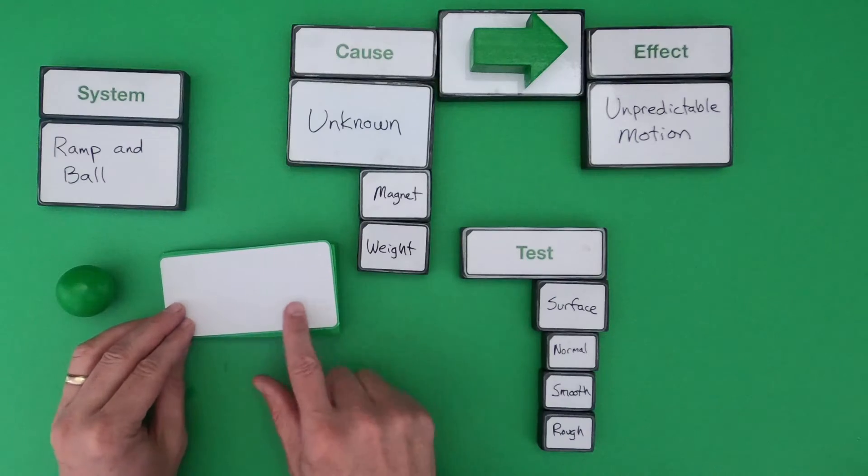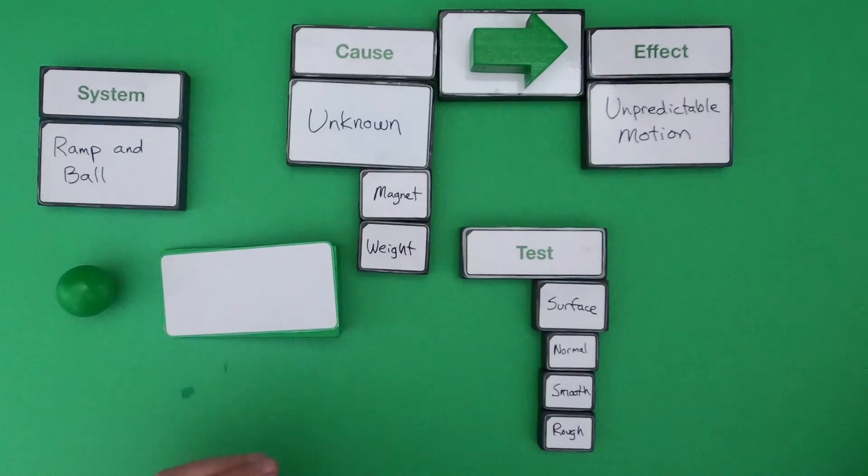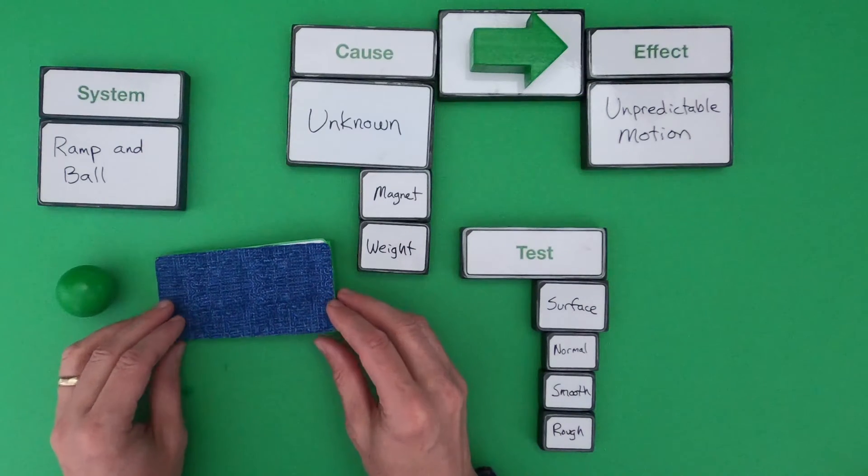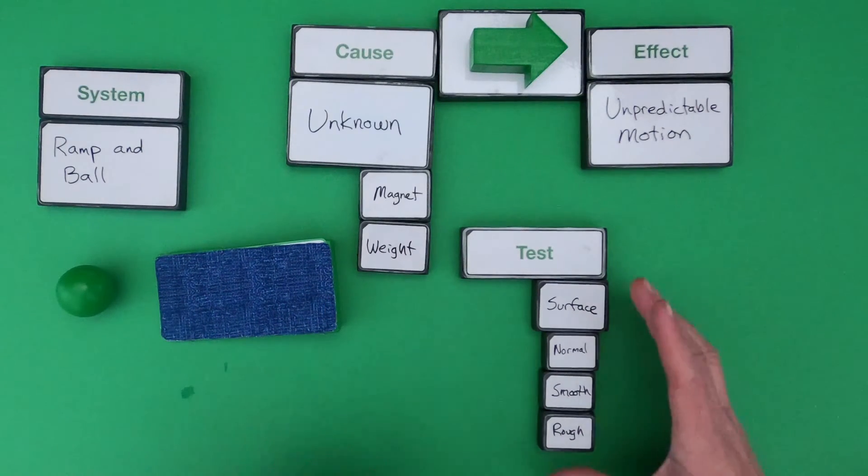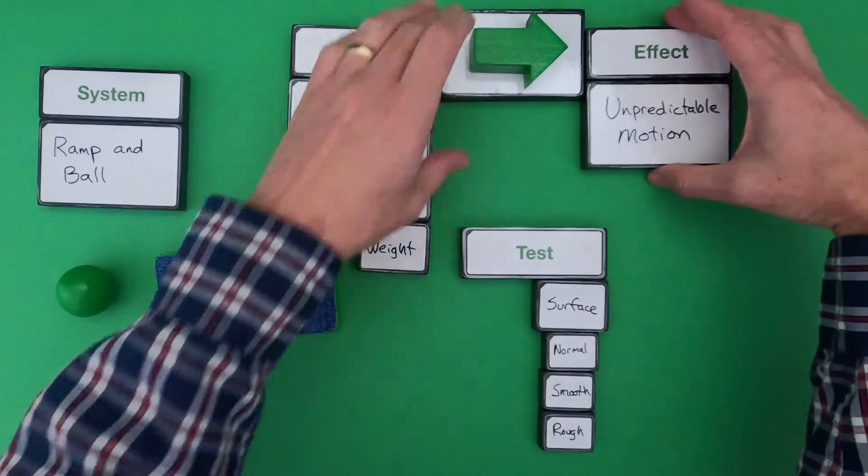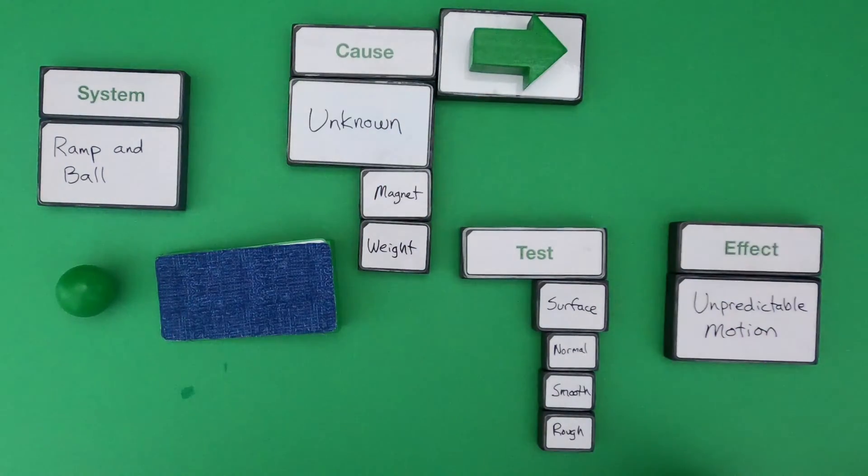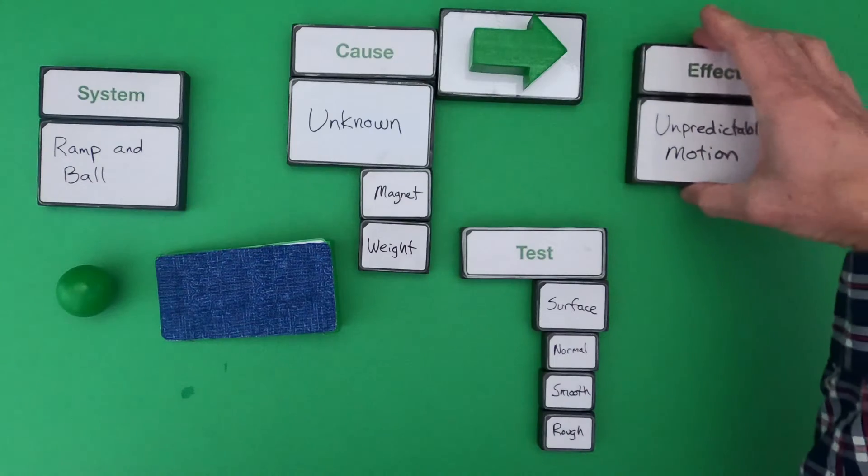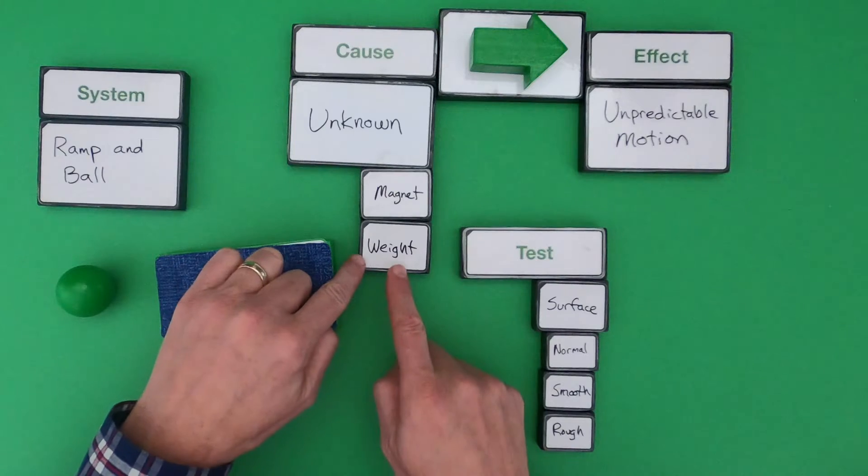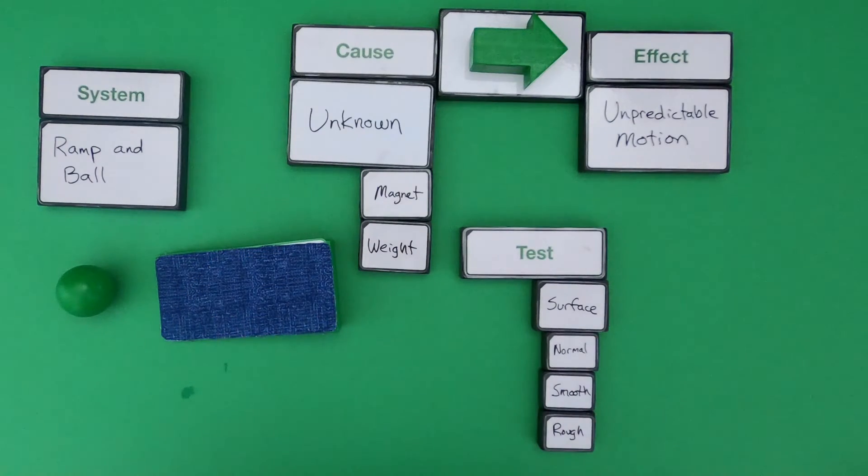So maybe I just get some paper and put it on the ramp so it's very smooth. Or maybe we use some fabric and put that on the ramp so we can change the surface to something that's rough. And so what we're doing is we're testing these as possible causes for the effect of unpredictable motion. After we've developed that test, the next thing we might do is we might look at the magnet or we might look at the weight. And the key thing that we're doing is we're only testing one of those possible causes at a time.